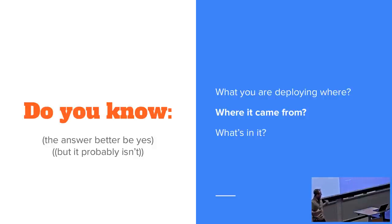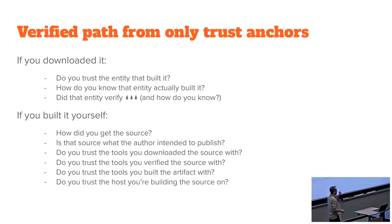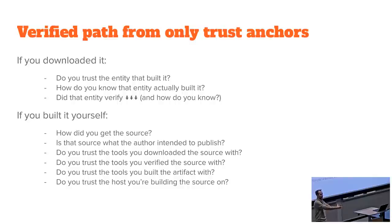Let's move to the second question: where did it come from? This one is surprisingly difficult. Can you trace every artifact you deploy back to sources that you trust? This turns out to be not quite turtles all the way down, but it's pretty close. You want a verified path from only trust anchors to your deployment. Trust anchors in security are sources you assume are trustworthy rather than derive to be trustworthy — things like assuming that everything signed by Microsoft's key is indeed from Microsoft because you have a contract with them. These are often soft kinds of things that affect your security assumptions.